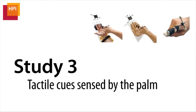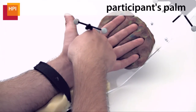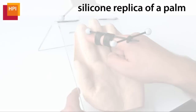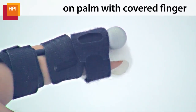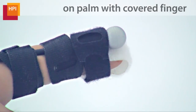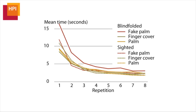In the third study, we systematically modified how tactile cues were sensed when interacting on the palm. We compared interaction on the user's palm as a control condition, to interaction on a silicone replica of a hand, to interaction on the user's palm while wearing a finger cover to dull tactile sensing. We found that the fake palm performed worse throughout the experiment even though it contained the same tactile cues as the participant's real hand, and that covering the pointing finger did not affect the participant's abilities.